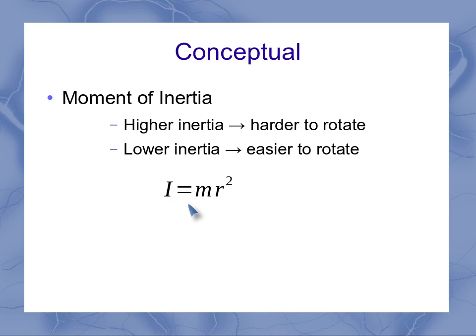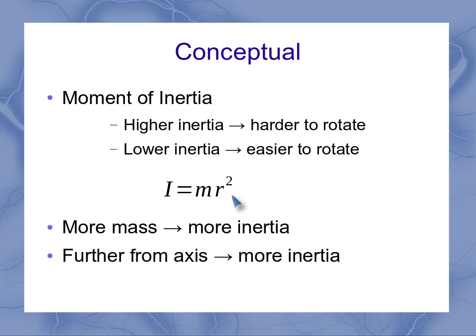If I go back to this first equation I have for a single particle, I can see that just like my regular inertia, more mass means more inertia. But now I've got the distance from the axis. The further away from the axis it is, the harder it is to get it rotating, meaning I've got a higher moment of inertia.